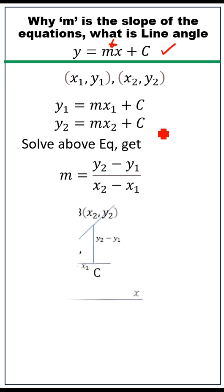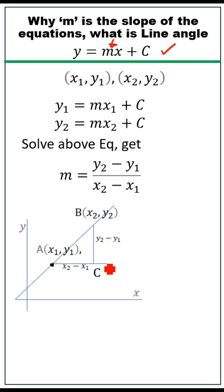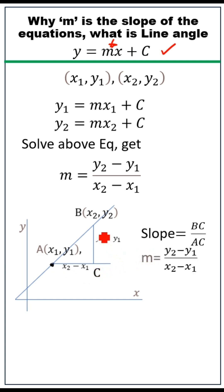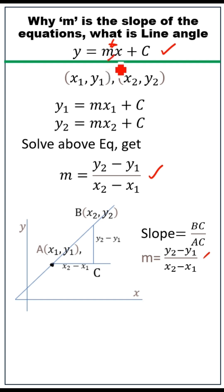Let's take x1, x2 points in the coordinate system passing through the line equation. We can find the bc value by subtracting y2 minus y1, and ac we get by subtracting x2 minus x1. Slope is the rise over the run — the rise is bc and the run is ac. So slope can be defined as y2 minus y1 by x2 minus x1, which is the same as m in the line equation. That's the reason m is called the slope of the line.